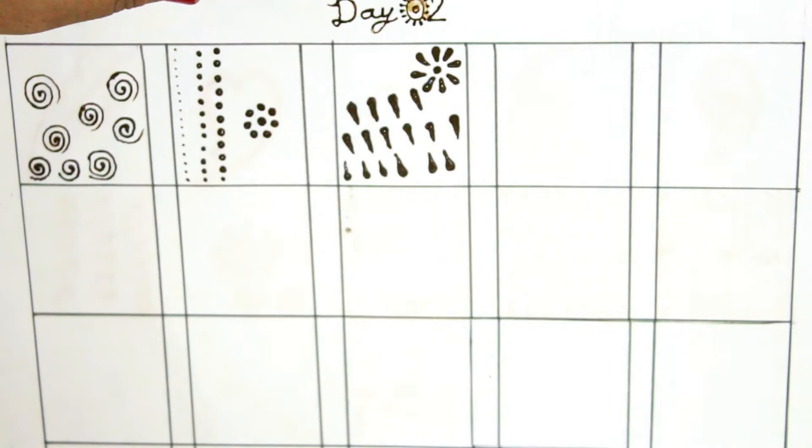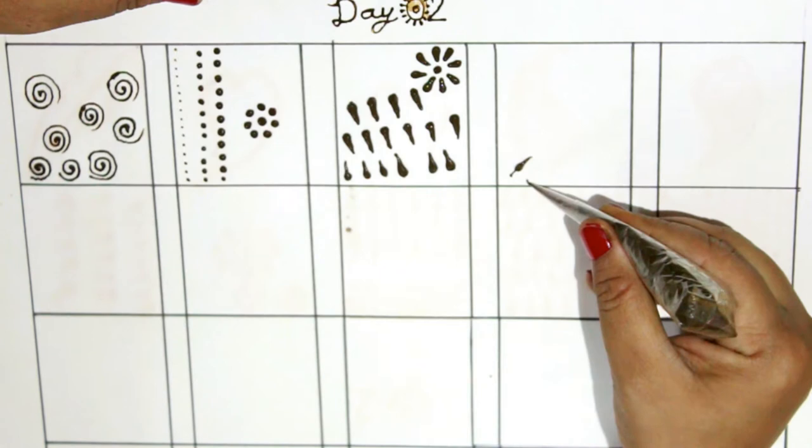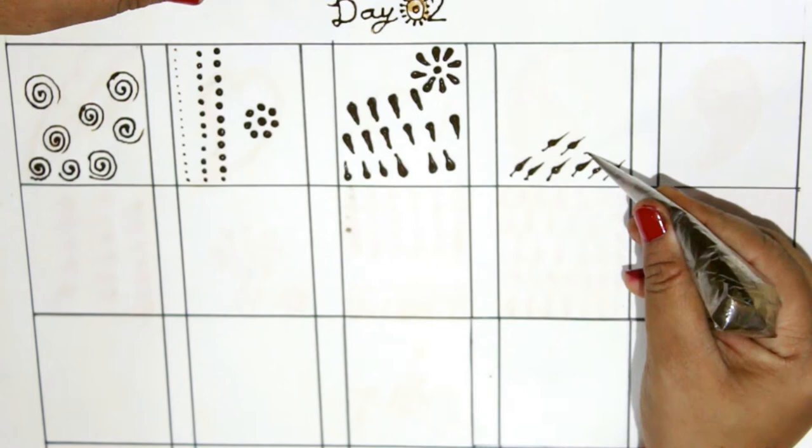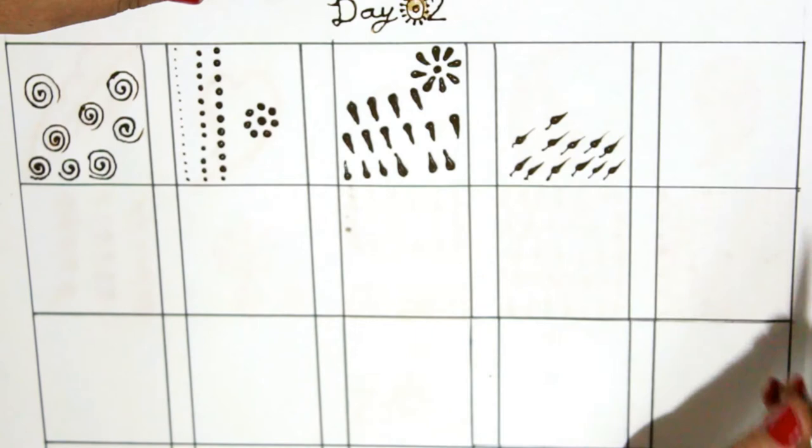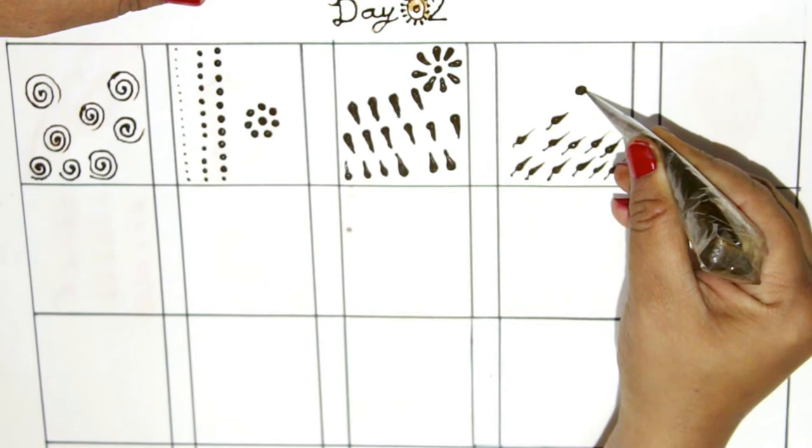Our next design will be of leaves. Let us learn how to make small leaves. Draw a small line and then create a drop on both sides. The drops can be used here as well in making leaves. Using these leaves, we can also create a heart shape.